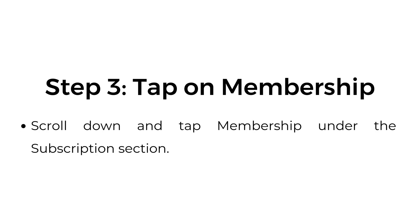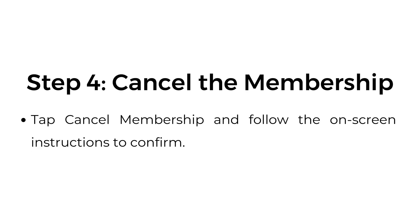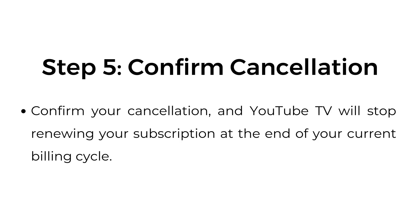Step three, tap on membership. Scroll down and tap membership under the subscription section. Step four, cancel the membership. Tap cancel membership and follow the on-screen instructions to confirm. Step five, confirm cancellation. Confirm your cancellation and YouTube TV will stop renewing your subscription at the end of your current billing cycle.